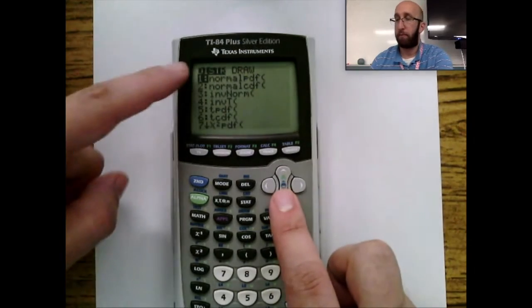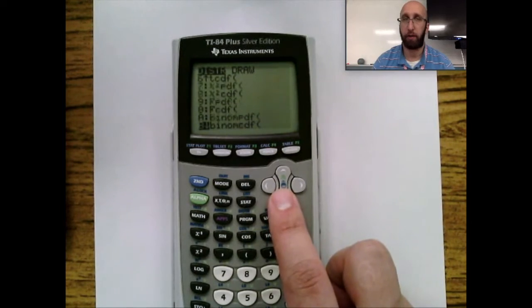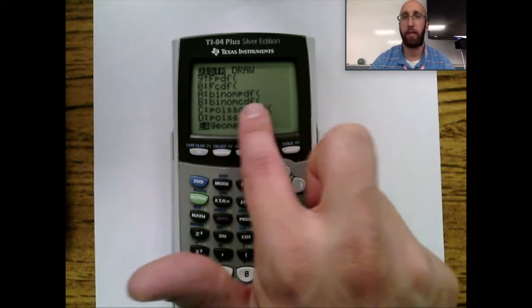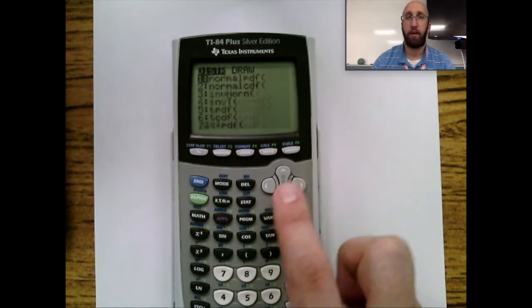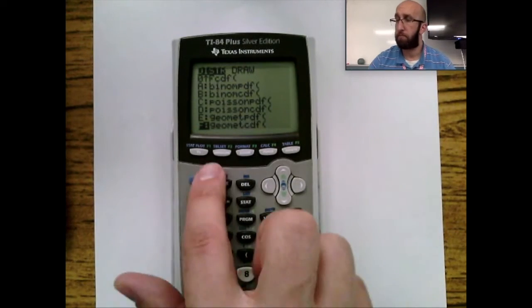Under here, believe it or not, these are a bunch of your z-tables and t-tables and chi-square tables. But I like to show you how to do those by hand. The big stuff is if you scroll down, there's your binomial PDF, binomial CDF, geometric PDF, and geometric CDF. So if you have a binomial or geometric distribution, you're going to go again to 2nd Distributions.